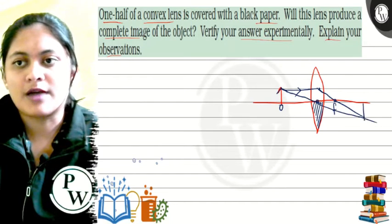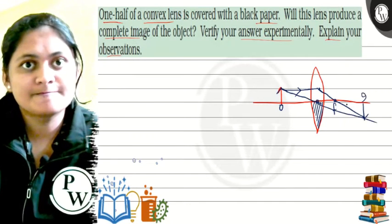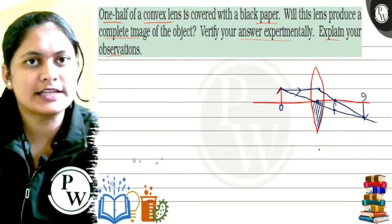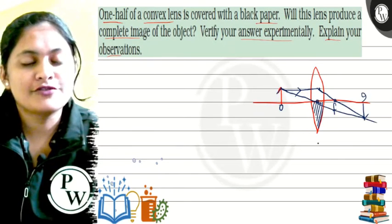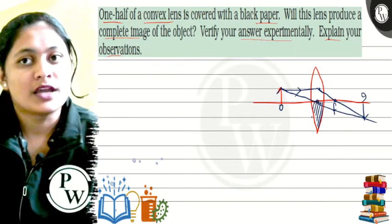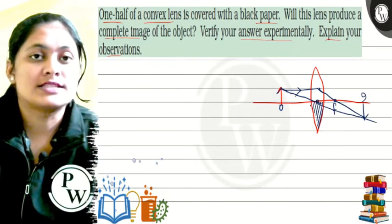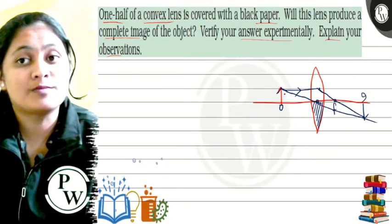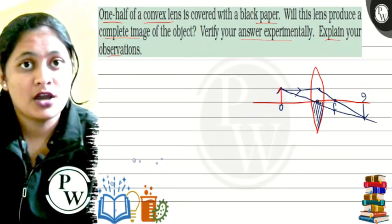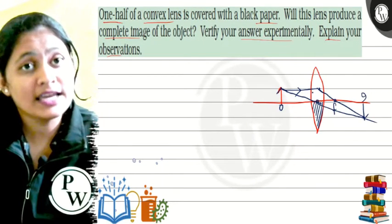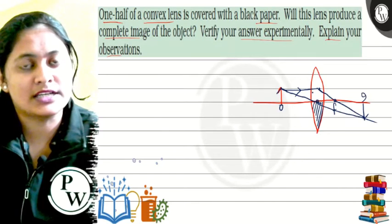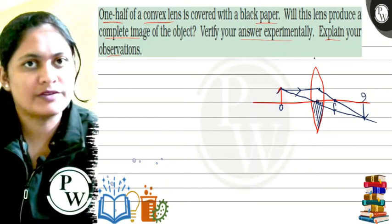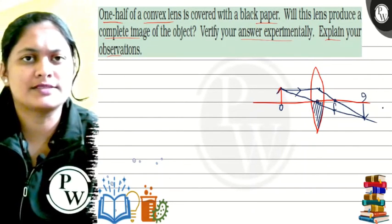So we will form an image of the object even if we cover with black paper. We have proved experimentally that if we cover the upper part of the lens, the lower part will still form an image of the object.